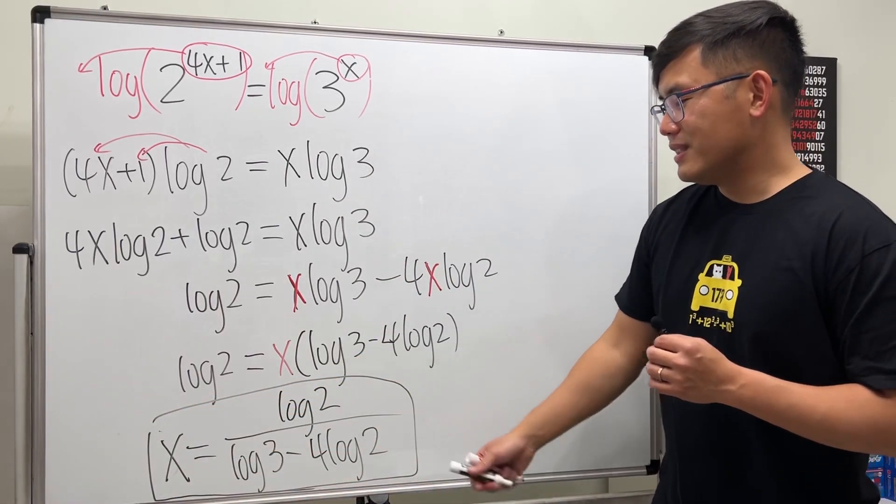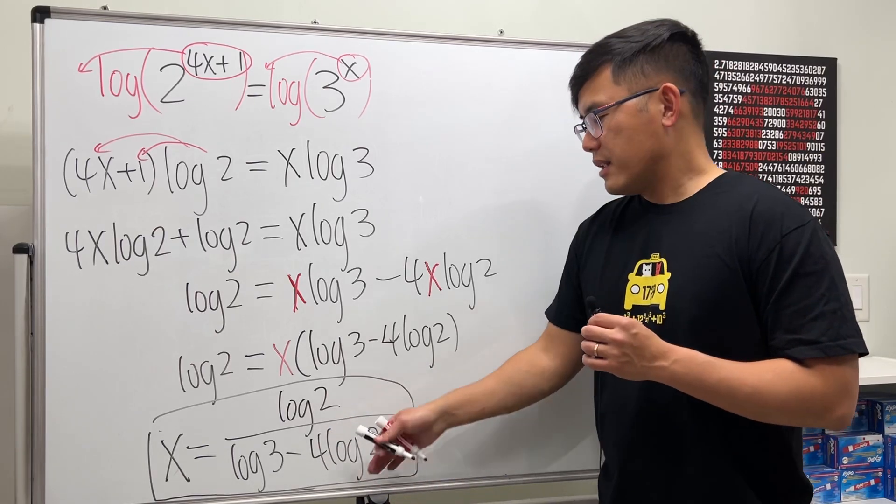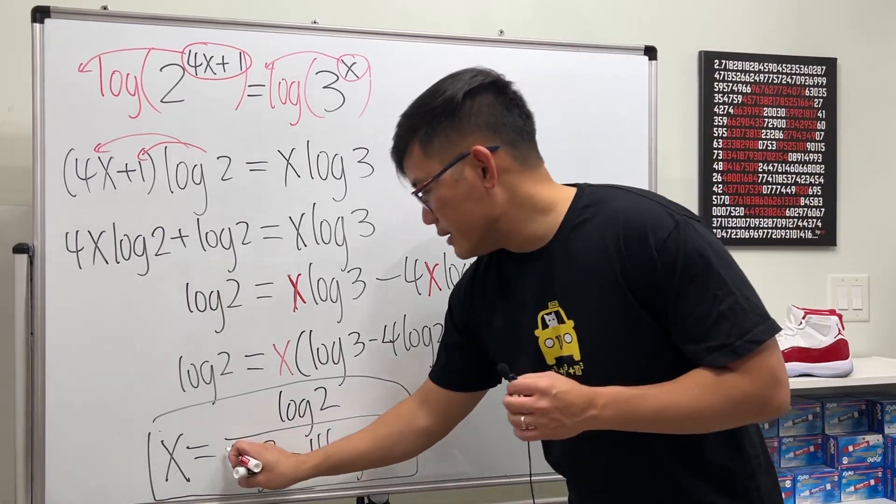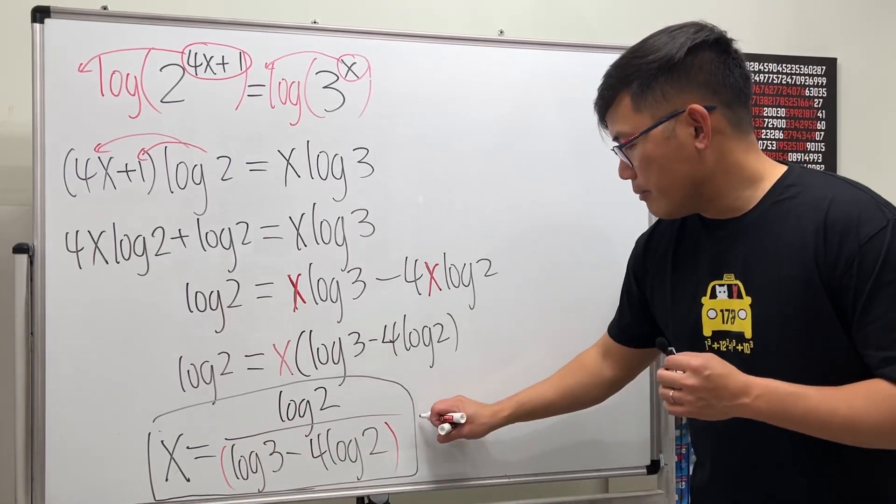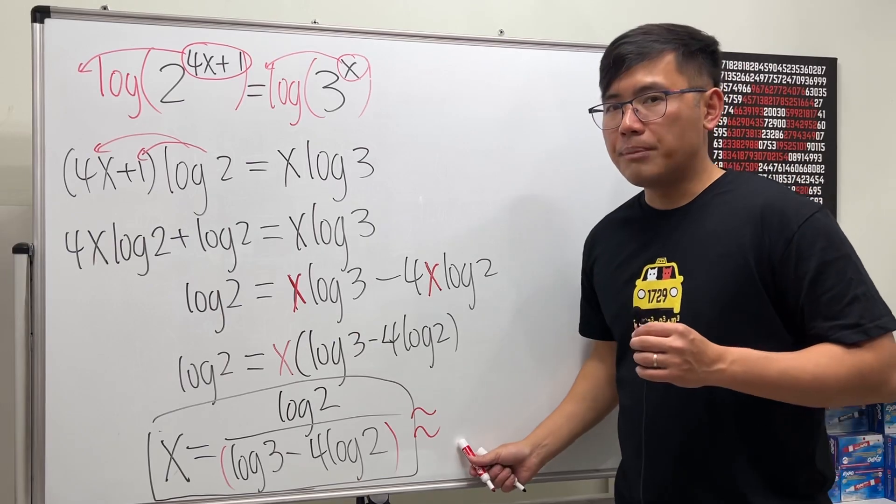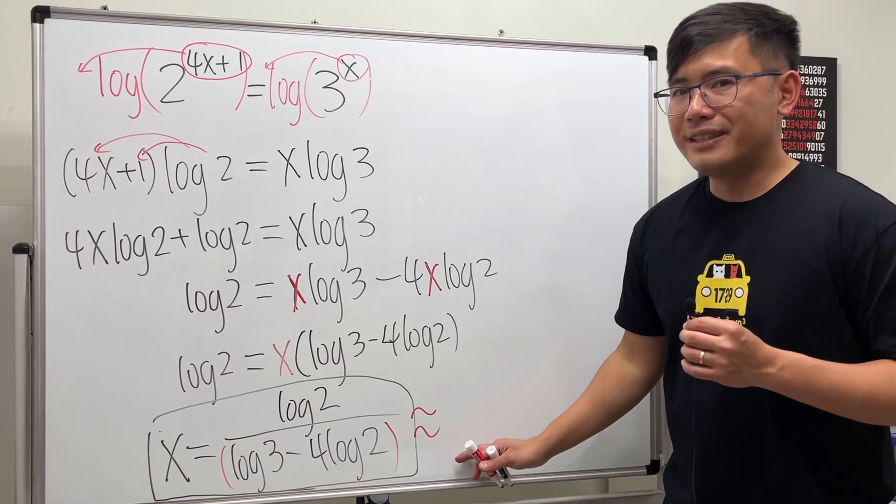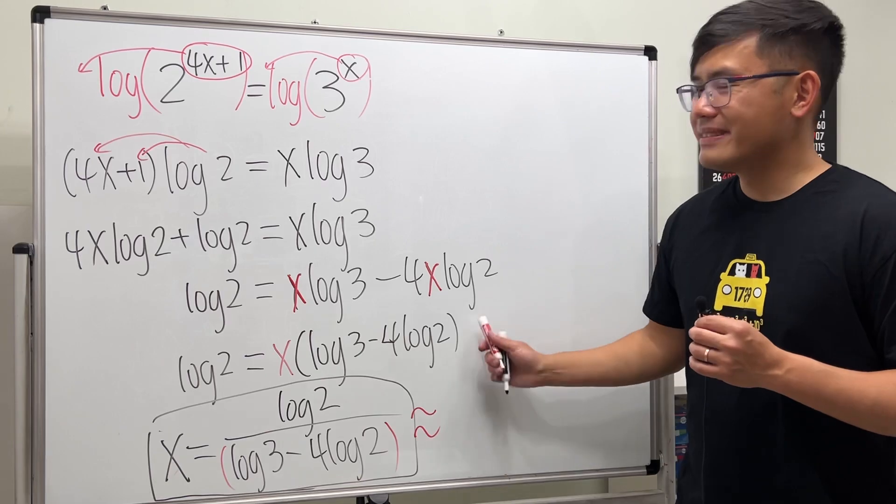And of course, with this, you can use the calculator and enter everything there. Make sure you put parentheses around this and that if you want to use the calculator to get approximation. Maybe you guys can leave a comment down below and let us know, this is approximately equal to what? Yeah, that's it.